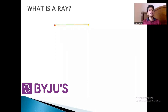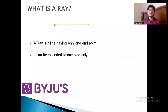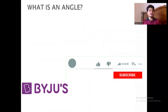So we can say that a ray is a line which has only one end point. As you can notice in the figure, on the left side it has a fixed point, but on the right side it has an arrow representing that it can be extended up to infinity. A ray is a line having only one end point and it can be extended to one side only.